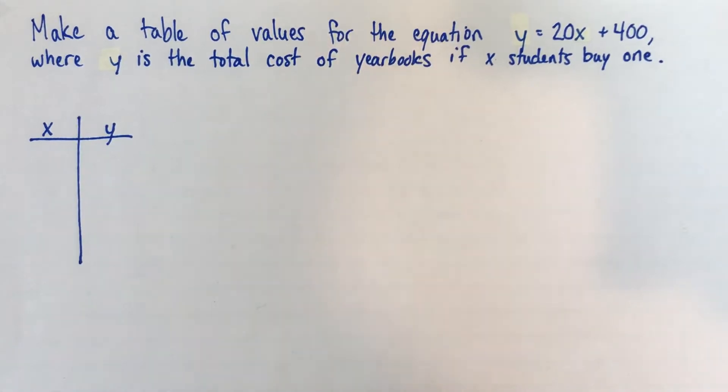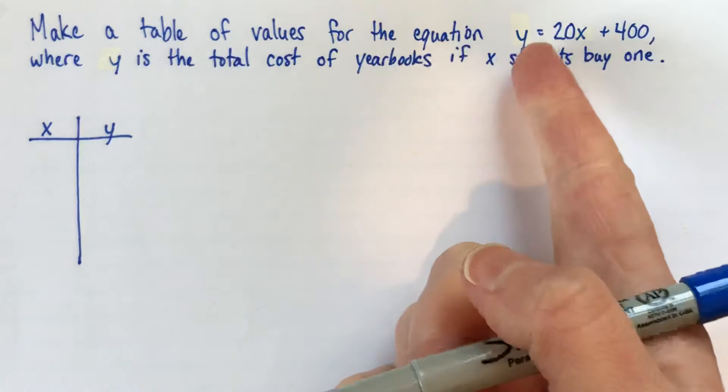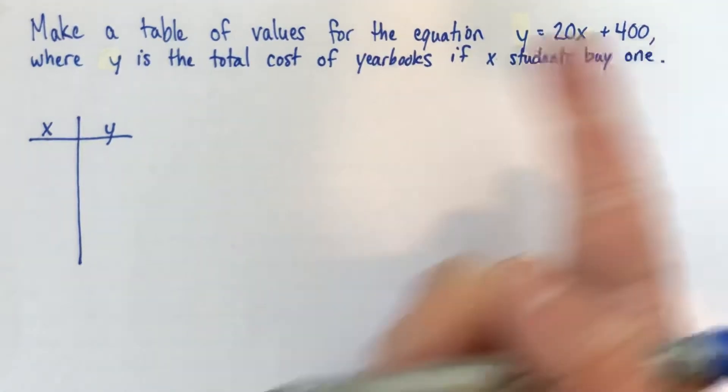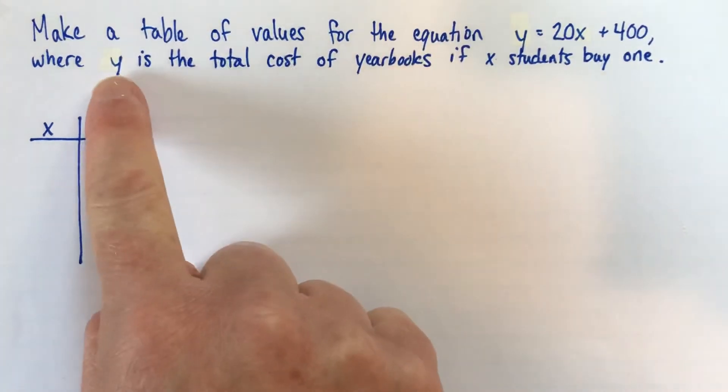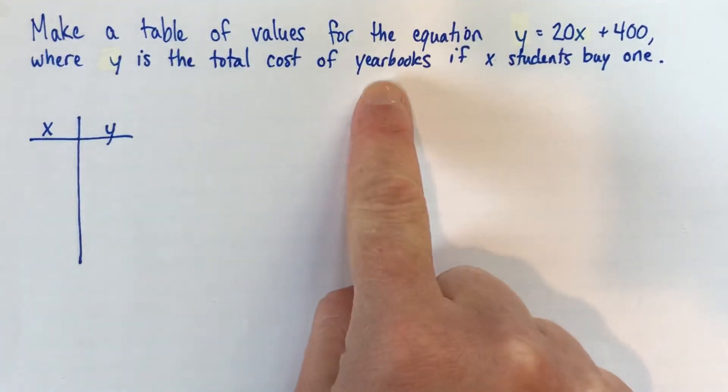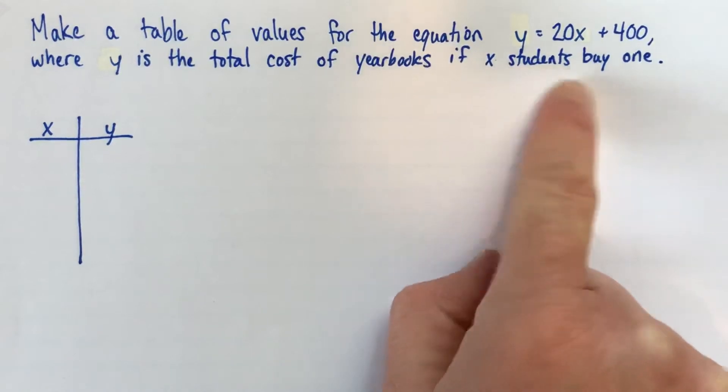So here's the first example. We're asked to make a table of values for the equation y equals 20x plus 400. And then they give us a little situation to tell us what this equation is representing. They say that y is the total cost of yearbooks if x students buy one.